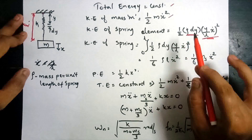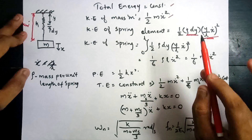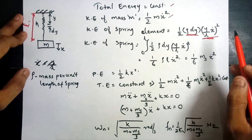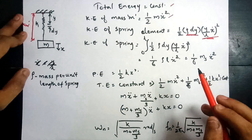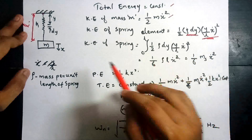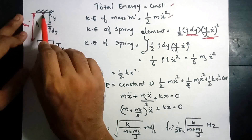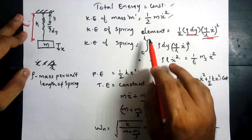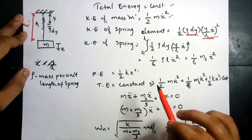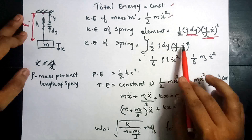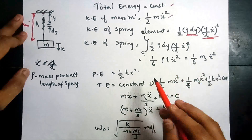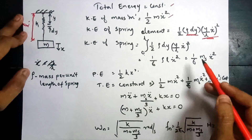The kinetic energy of the spring element is half times (rho dy) times (y/L · x-dot) squared, which is similar to half m v squared. To find the total kinetic energy of the spring, we integrate from y equals zero to y equals L. After integrating, the result is (1/6) rho L x-dot squared.